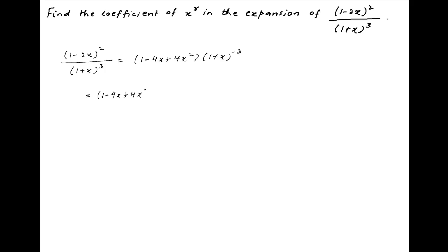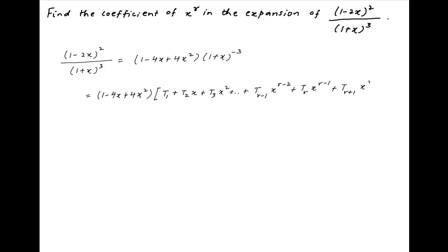Using the binomial theorem, this can be written as (1 minus 4x plus 4x square) times, in brackets, t1 plus t2·x plus t3·x square plus and so on, plus t_{r-1} times x raised to the power r minus 2, plus t_r times x raised to the power r minus 1, plus t_{r+1} times x raised to the power r, plus and so on.